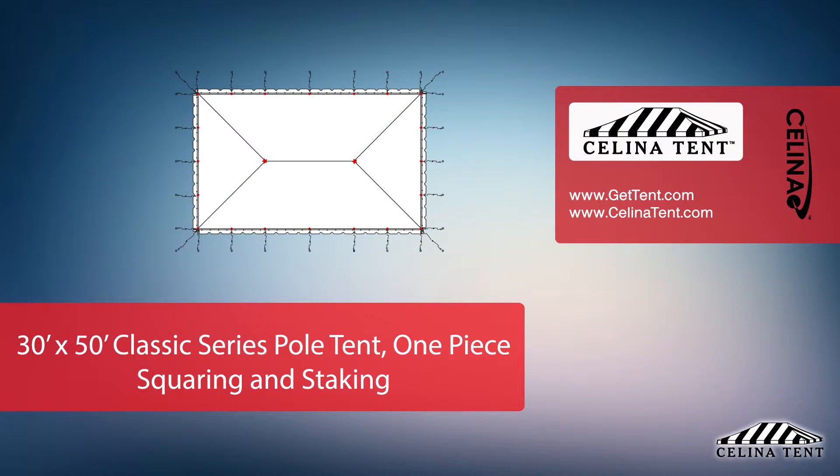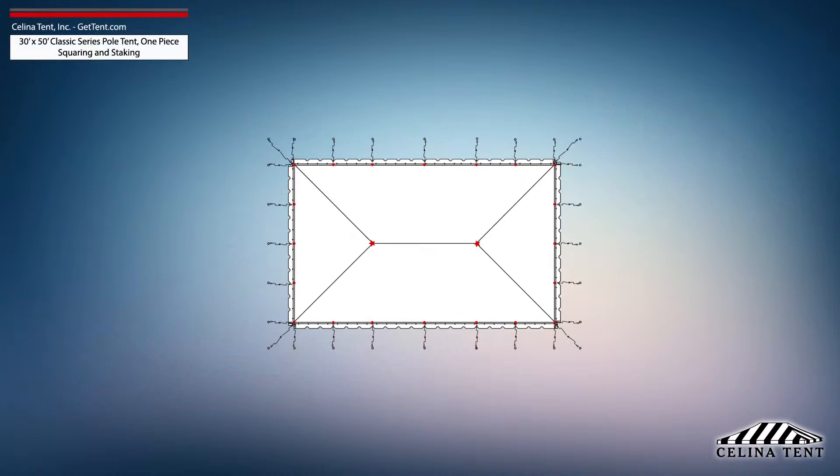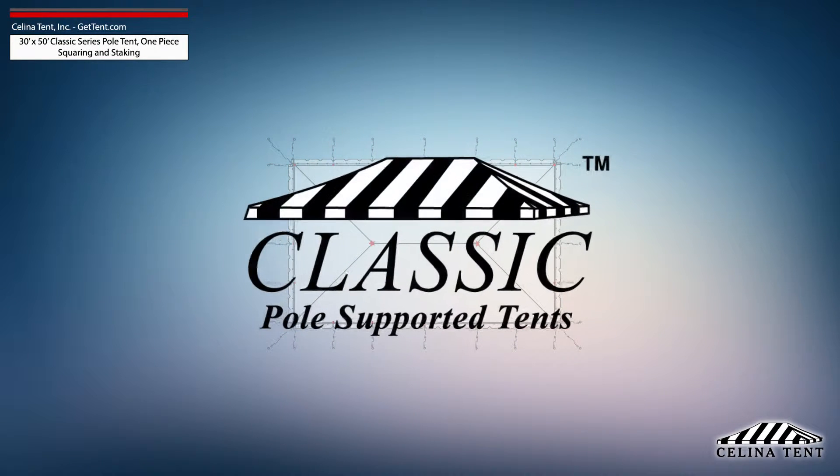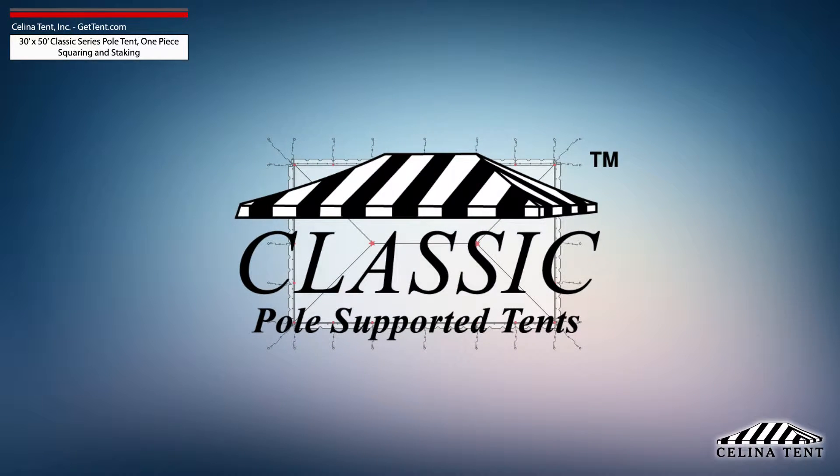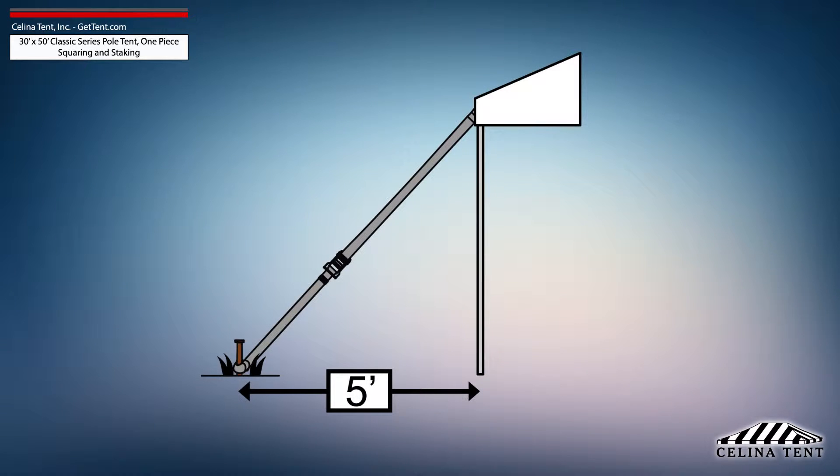This video covers squaring and 5-foot staking applicable to a one-piece 30-foot by 50-foot classic series pole tent from Celina Tent. 5-foot staking is standard for tents with an eave height of 7 or 8 feet and would need to be adjusted for eave heights other than this standard.